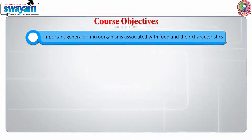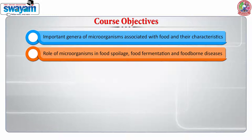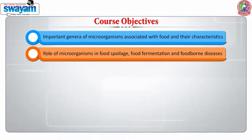Therefore, to make you aware of all important information, the course on food microbiology and food safety has been designed to have a holistic comprehension on the important genre of microorganisms associated with the food and their characteristics, and the role of microorganisms in food spoilage, food fermentation, and foodborne disease.